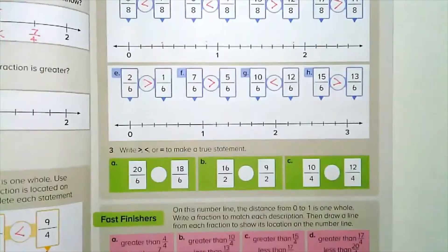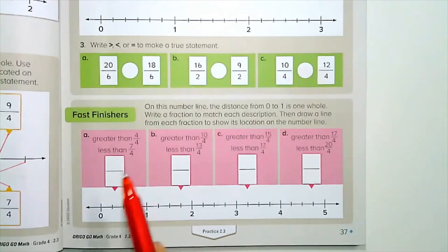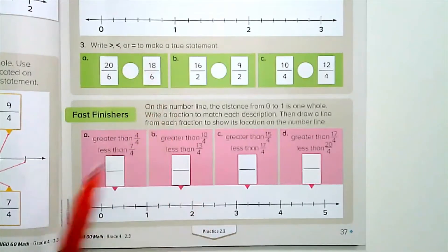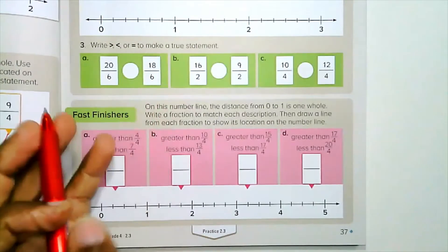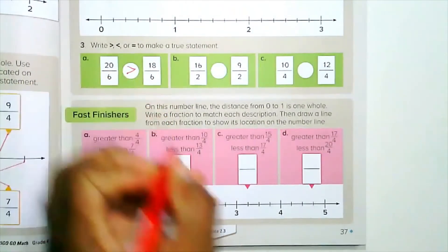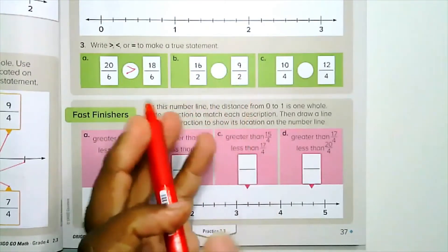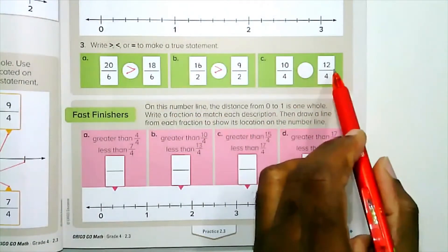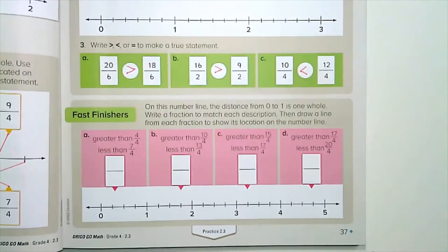Now let's go on to number three: write less than, greater than, or equal to make a true statement. Twenty-sixths is greater than eighteen-sixths. Sixteen-halves — sixteen-halves is greater than nine-halves. Ten-fourths is less than twelve-fourths. Now let's go on to the first finishers.